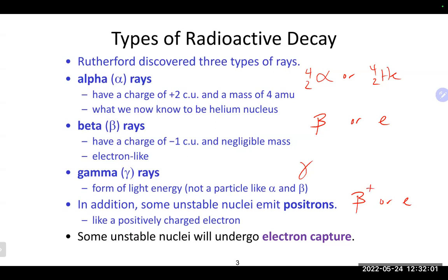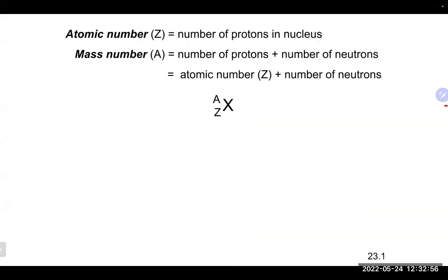There are also positrons — like electrons but positive — with charge plus one and negligible mass. A nucleus can also undergo electron capture, where it gets hit with an electron. In terms of writing equations: anything emitted or going through decay ends up on the product side; anything that is electron captured or bombarded ends up on the reactant side.